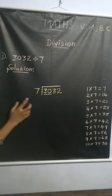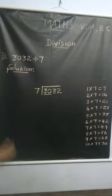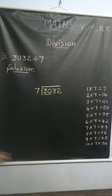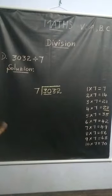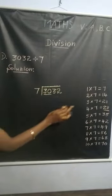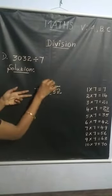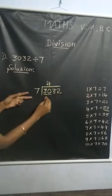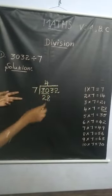Let's check the table. How many sevens are in 30? 30 is not in the 7th table, so we find one value which is nearest and smaller than 30. That value is 28. 28 is nearest but smaller than 30. How many sevens are in 28? 4 sevens are 28.